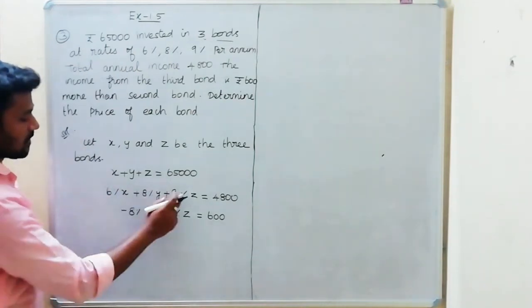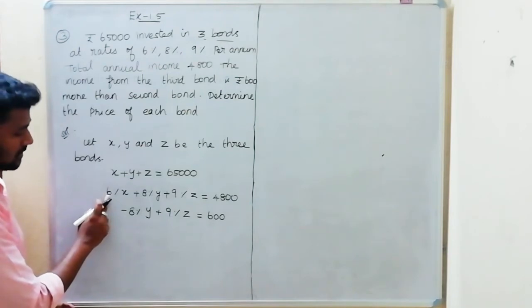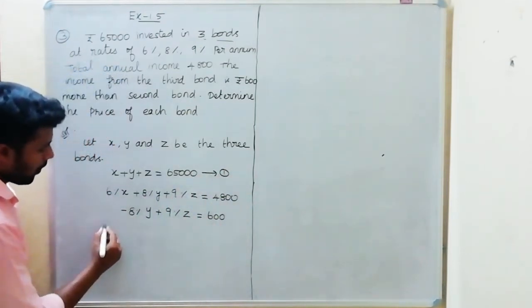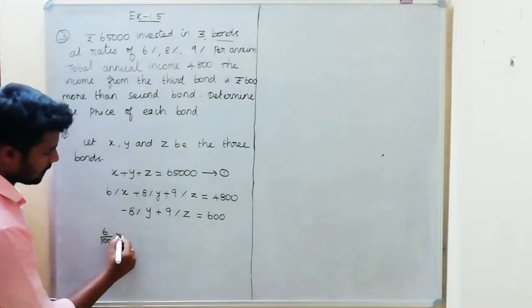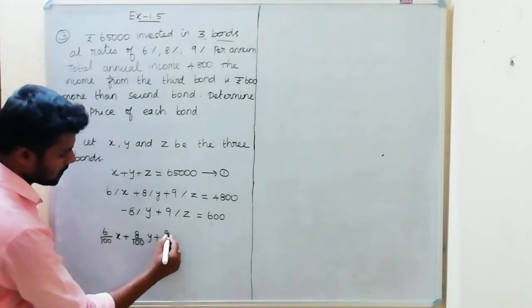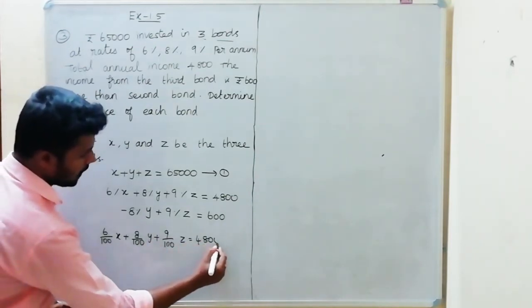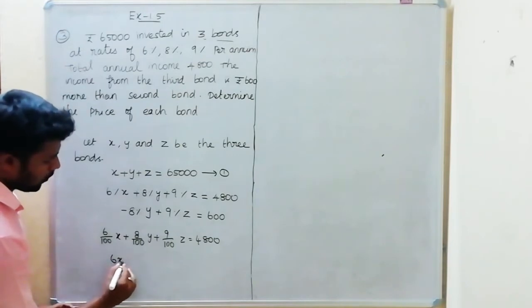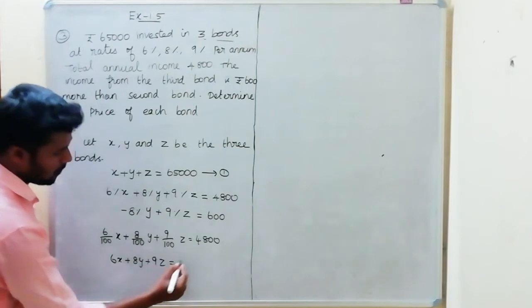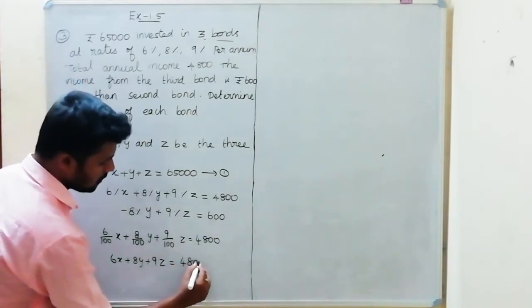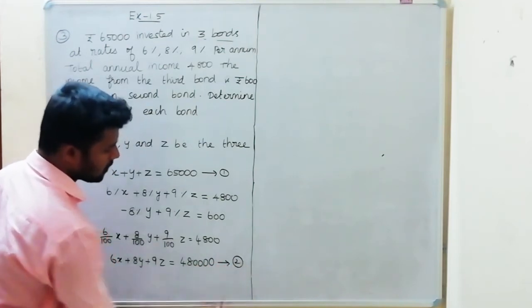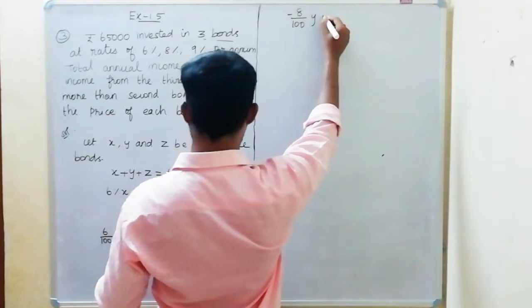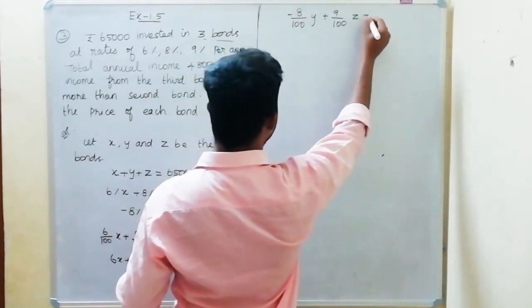Simplifying the second equation: 6 divided by 100 x, plus 8 divided by 100 y, plus 9 divided by 100 z equals 4,800. Multiply everything by 100 to eliminate fractions.